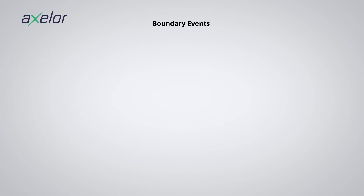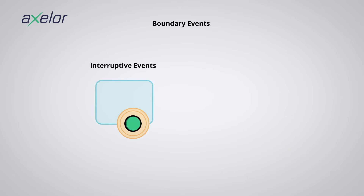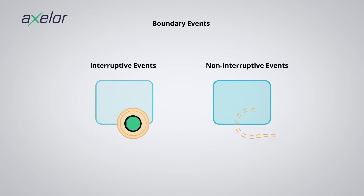There are two categories of boundary events. Interruptive events, which can be identified by a double continuous line — when triggered, these events will terminate the task to which they are attached and redirect the flow. And the non-interruptive events, identified by a double dashed line, which allow the creation of a parallel flow without interrupting the main flow.